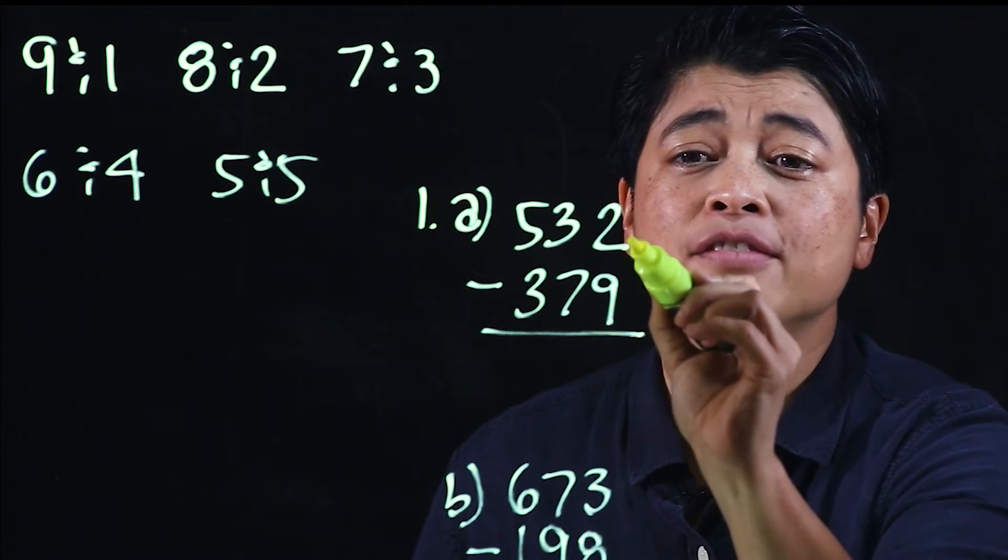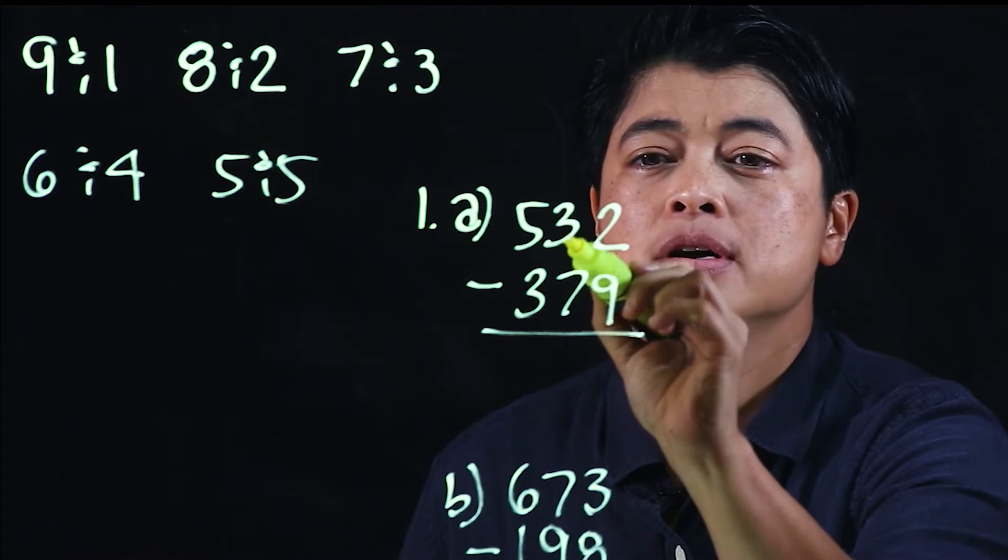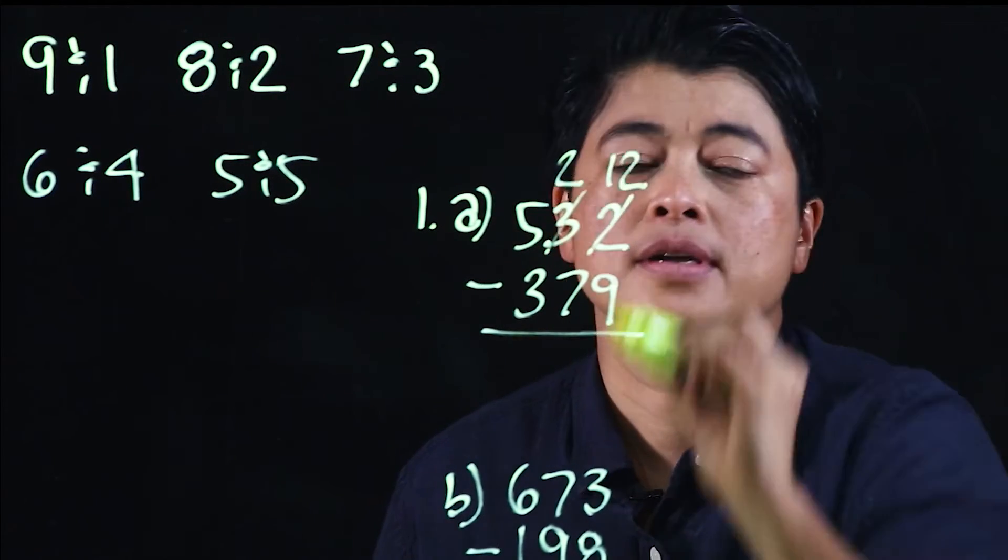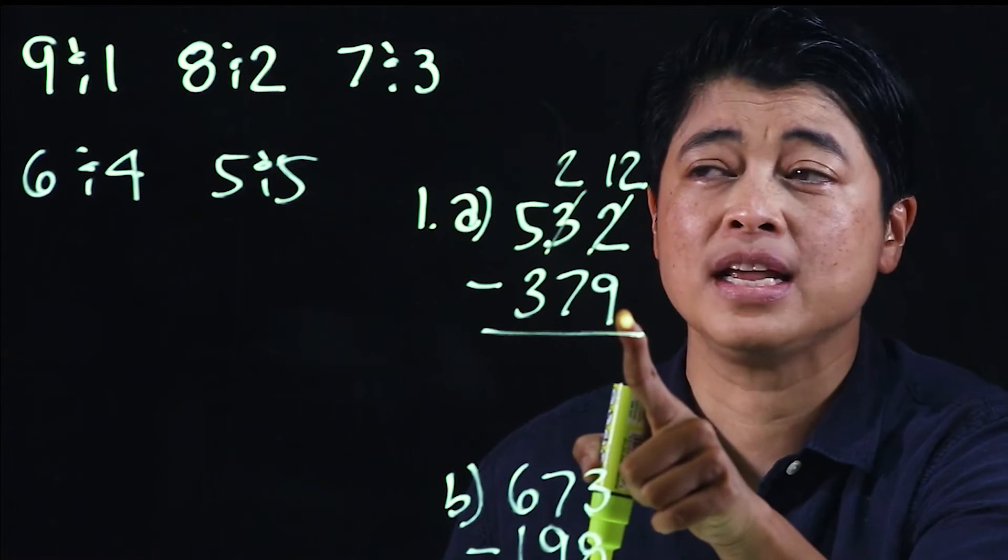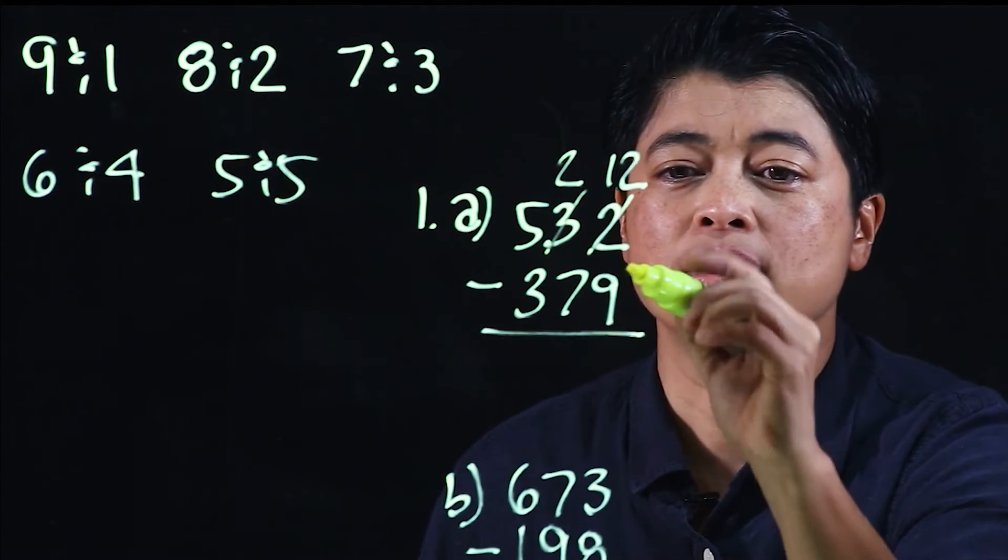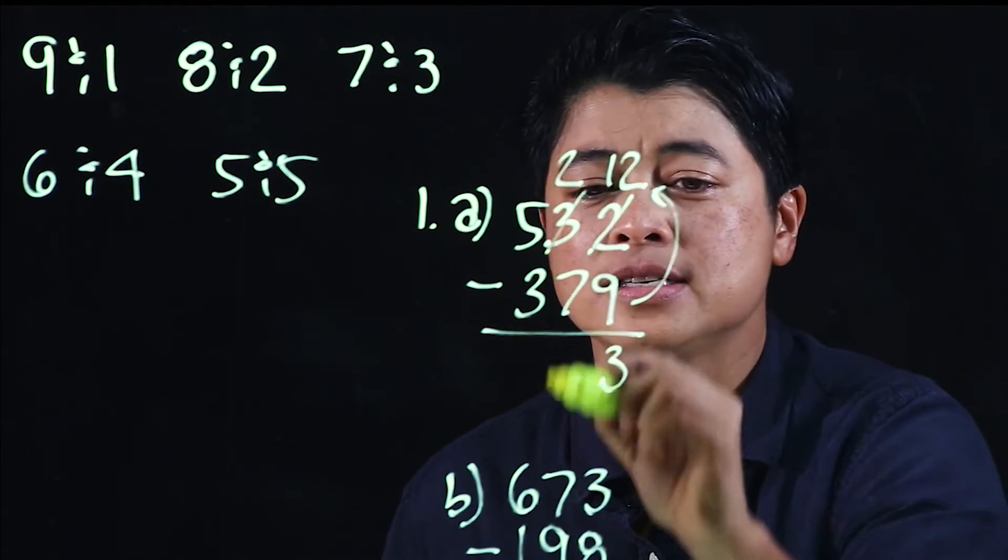And regroup. The strategy is to start with nine. We need one more to get to ten, and we need another two to get to twelve, so that makes it three.